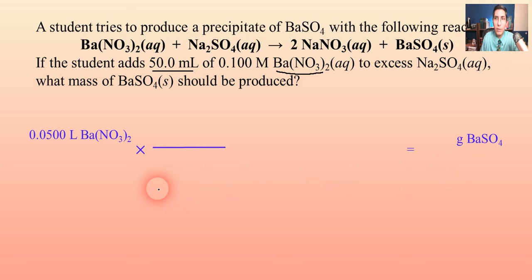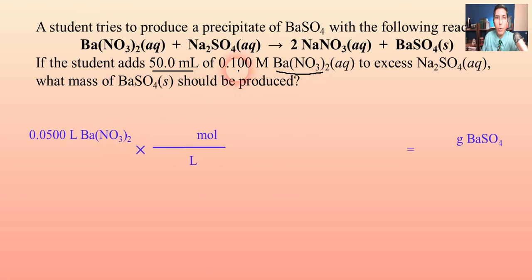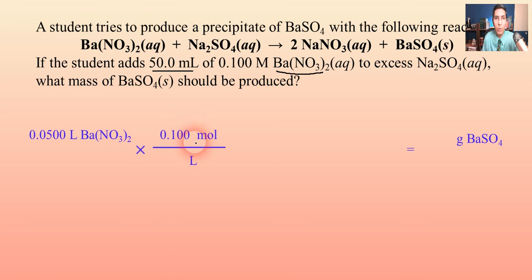Step one is to convert to moles. Liters go on the bottom and moles go on top. We use the molarity as the conversion factor — the barium nitrate is 0.100 molar, meaning 0.100 moles per one liter. So we put 0.100 moles for every one liter. Liters cancel and we're now in moles of barium nitrate.